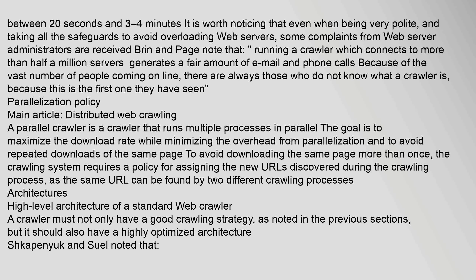A parallel crawler is a crawler that runs multiple processes in parallel. The goal is to maximize the download rate while minimizing the overhead from parallelization and to avoid repeated downloads of the same page. To avoid downloading the same page more than once, the crawling system requires a policy for assigning the new URLs discovered during the crawling process, as the same URL can be found by two different crawling processes.